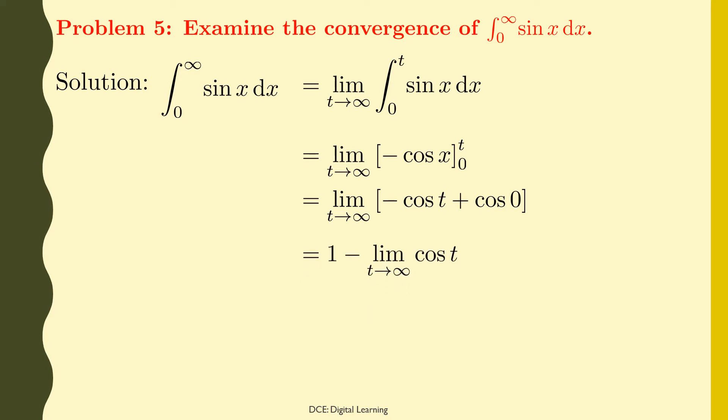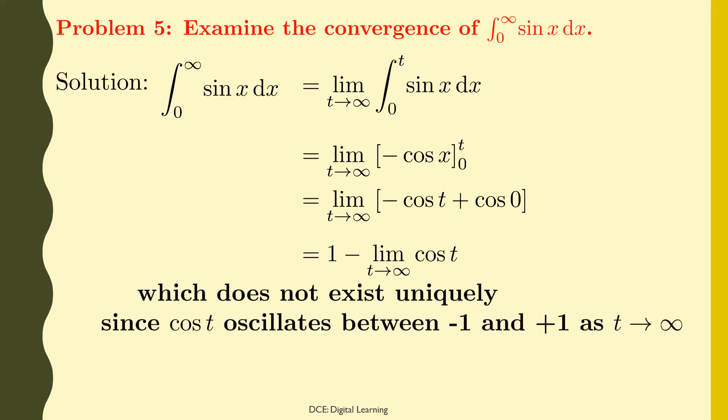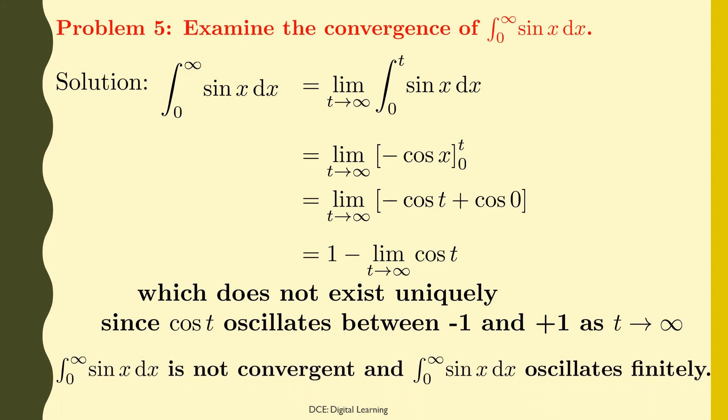This equals 1 minus the limit of cos(t) as t tends to infinity, which does not exist uniquely, since cos(t) oscillates between −1 and +1 as t tends to infinity. Therefore, the given integral of sin(x) dx from 0 to infinity is not convergent and oscillates finitely.